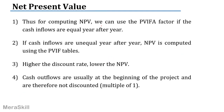For computing the NPV, we can use the present value interest factor of an annuity if the cash inflows are equal. If they are unequal, we use the PVIF tables. Higher the discount rate, lower will be the net present value. Cash outflows are usually at the beginning of the project and therefore are not discounted — we use a multiplier of one.